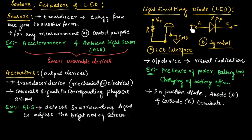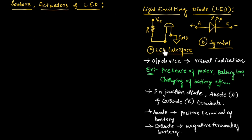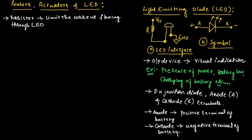The anode should always be connected to the positive terminal of the battery or supply voltage, and the cathode should always be connected to the negative terminal. Figure A shows the LED interface, where a resistor is used to limit the current flow through the LED.